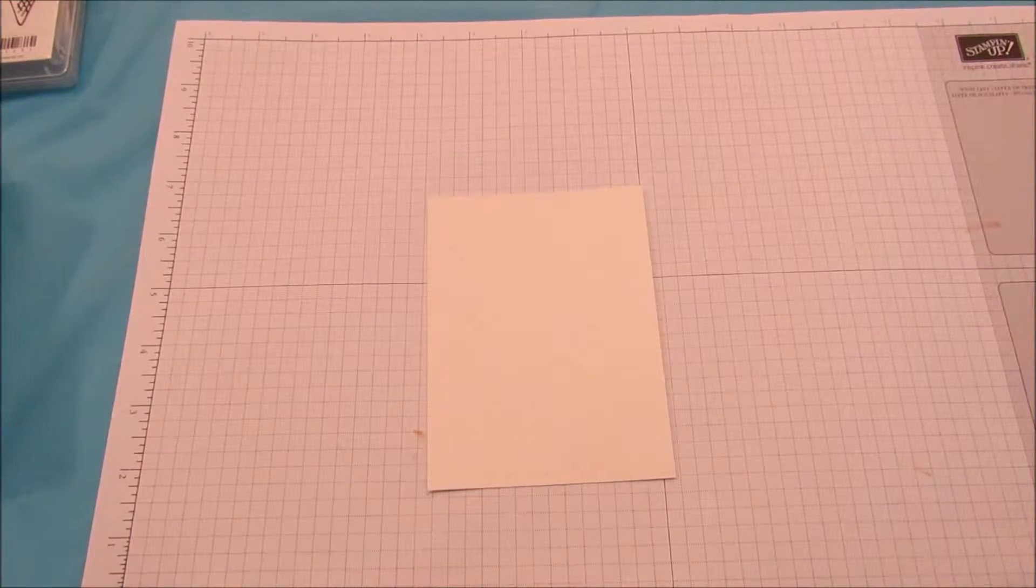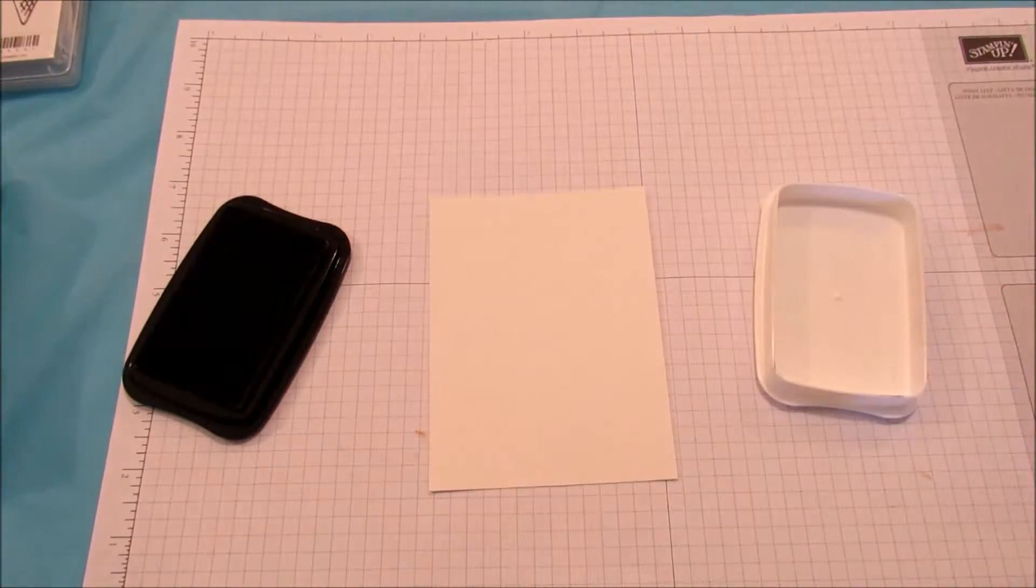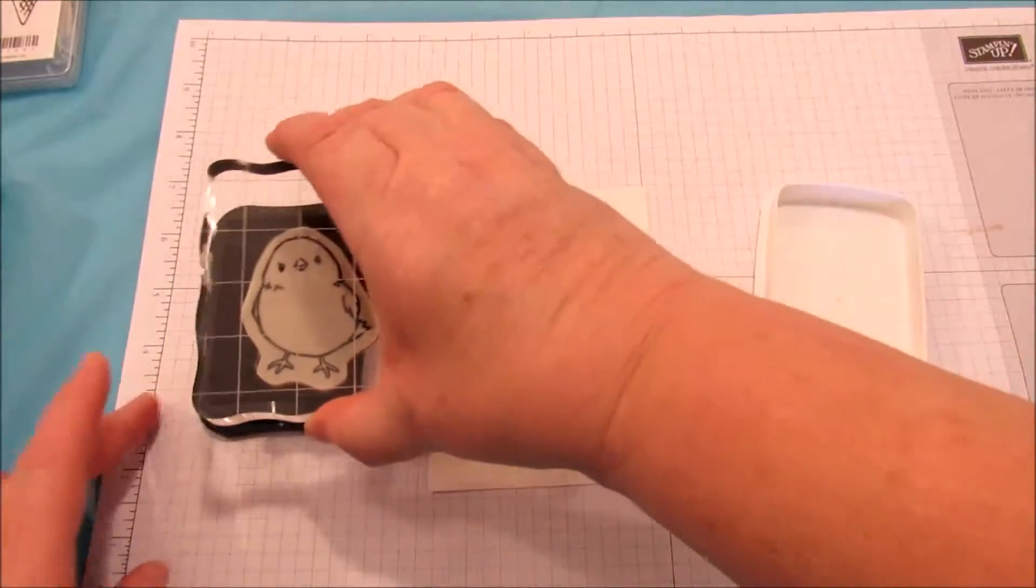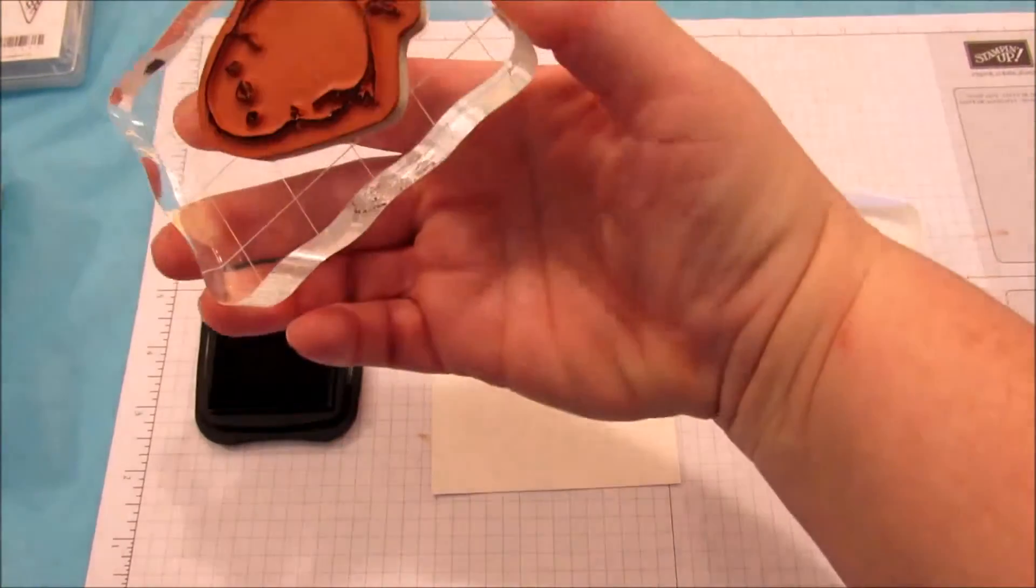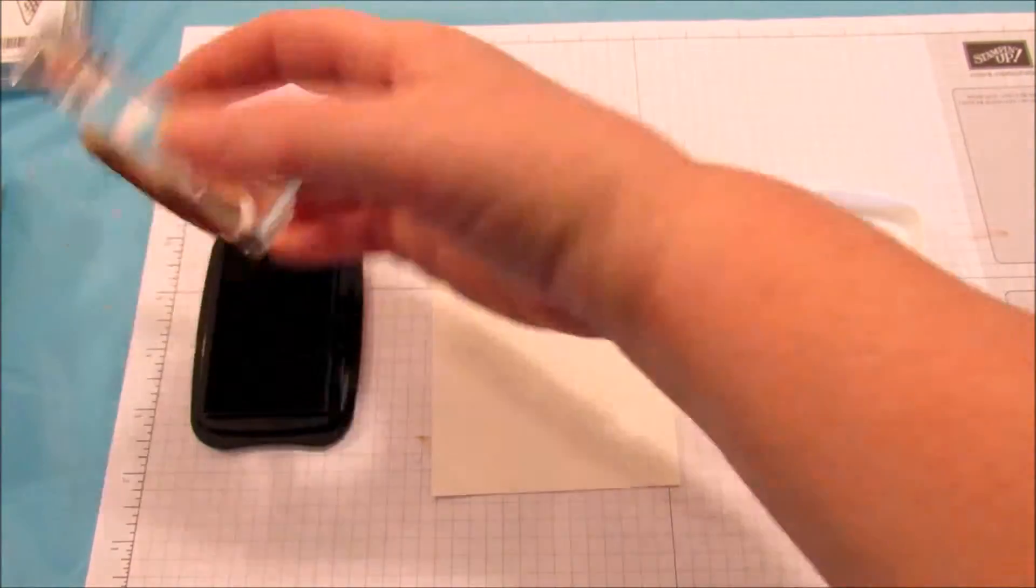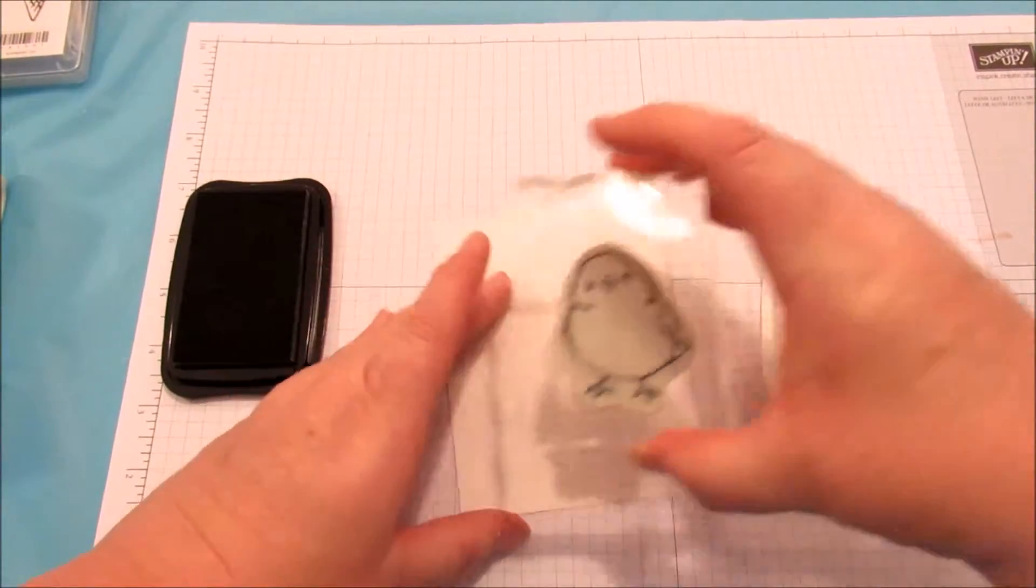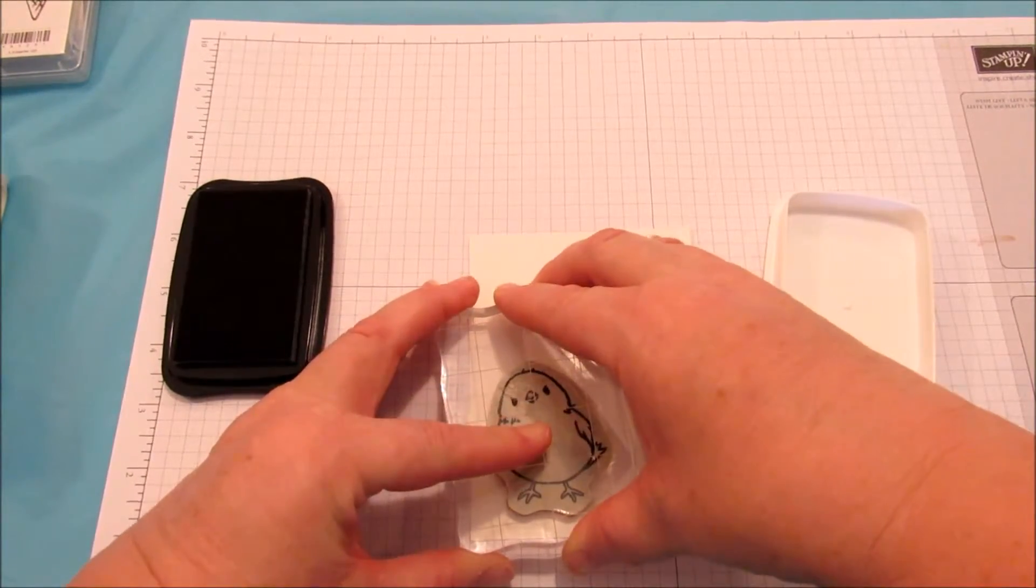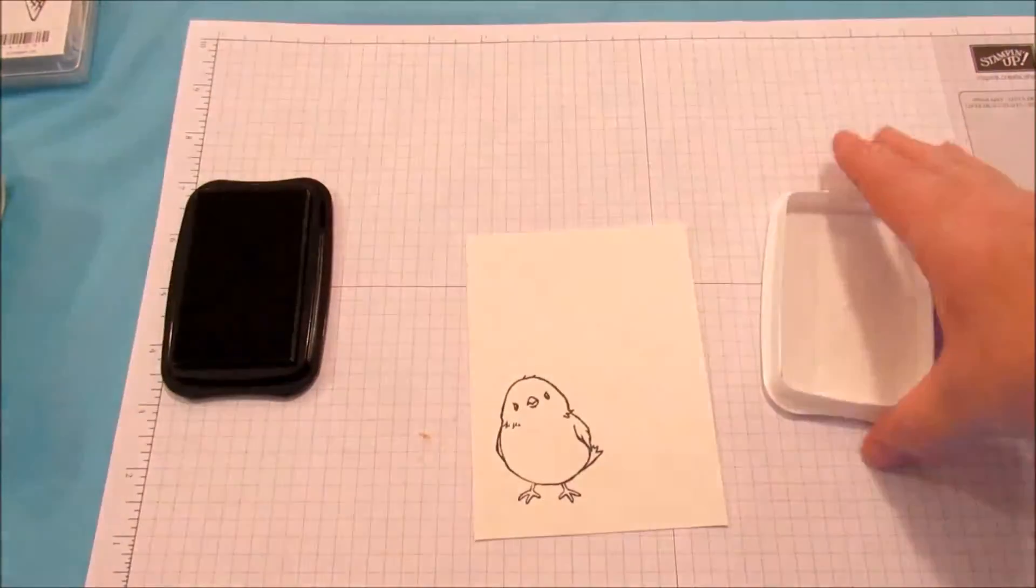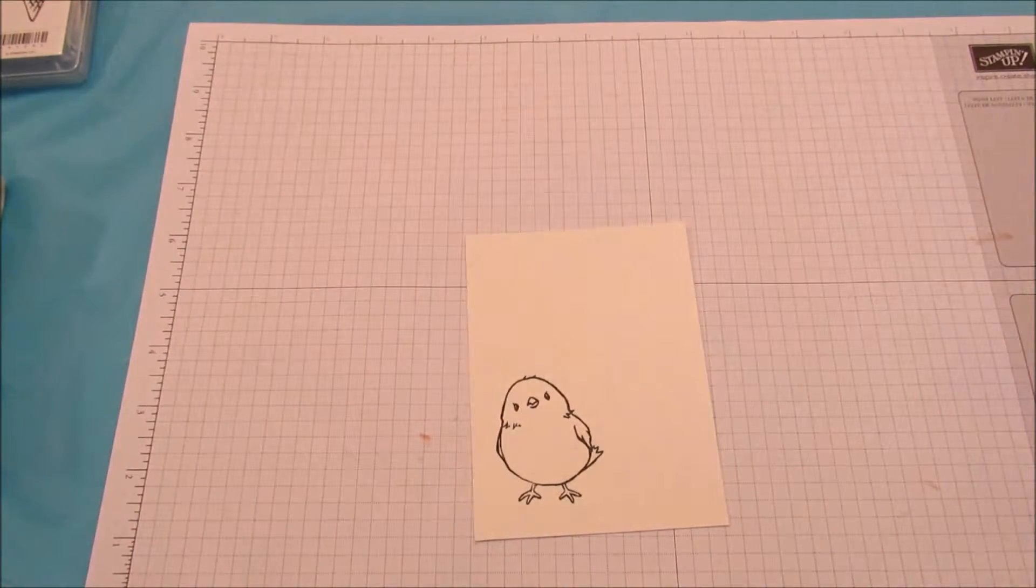So to start out, we're going to start with our memento ink. I'm just going to stamp the chicken in it. A little chicky. Make sure it's on there good. A few little pats. Make sure it's on there cute. I'm going to place it, I think, towards the bottom here a little bit, like that. I'm going to let that dry. We don't need this any longer. I'm going to get rid of my ink pad quick.